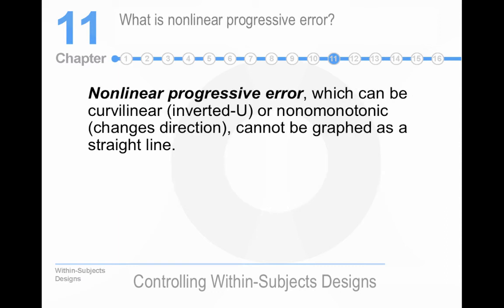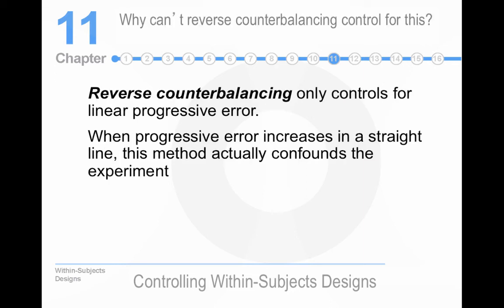Non-linear progressive error is different. The previous example was linear progressive error. This is like when maybe people get a second wind or a third wind from being in the study, and they forget how bored they are, and their performance actually picks up. And that's what non-linear progressive error is. Why can't reverse counterbalancing control for this? Well, because if the progressive error occurs in a straight line, this would confound it. Nobody uses it anyway.